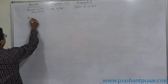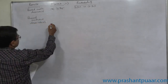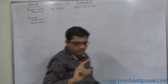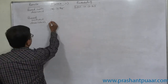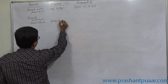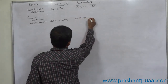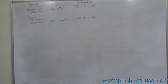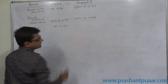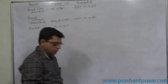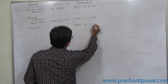The second category is passed without distinction, meaning marks are 40 or more but less than 75, so 40 ≤ X < 75. The probability for this category is 60%. The third category is failed, meaning marks are less than 40, and 30% of students failed, so the probability is 0.3.